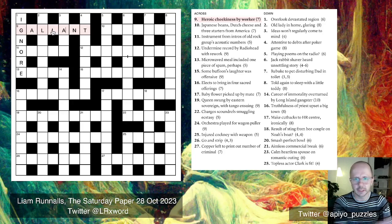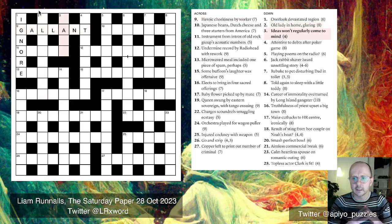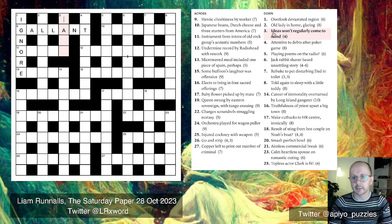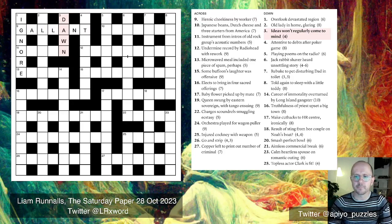Let's try 3-down: 'ideas won't regularly come to mind.' This is an every-second-letter type clue. If we take letters at regular intervals from 'ideas won't,' starting from the second letter, we get D-A-W-N — that gives us DAWN, which indeed means to come to mind. These kinds of clues are often indicated by words like 'oddly,' 'evenly,' or 'every now and then.'